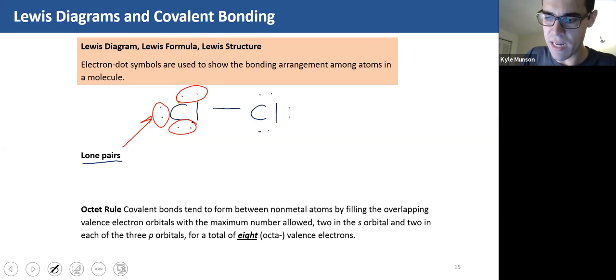And the octet rule as listed here says this, that covalent bonds tend to form between non-metal atoms by filling overlapping valence electron orbitals with the maximum number allowed, two for s orbitals and two for each of the three p orbitals for a total of eight valence electrons. So again, they're going to share these atoms. They're going to share so that they both get eight electrons around them. That's the octet rule. So they shouldn't have more than eight. They shouldn't have less than eight.